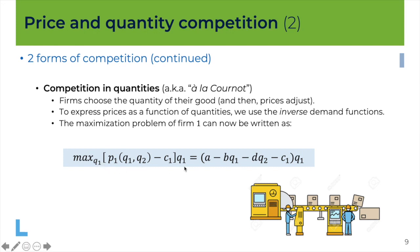So here we use the inverse demands. The expression of the profit is still the same, it's the margin times the quantity. But here we replace the price by the inverse demand function. And so we have this expression here. And this is maximized by firm one by choosing the quantity it puts on the market.